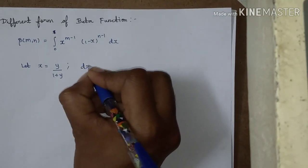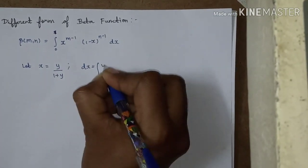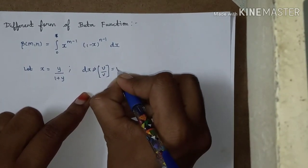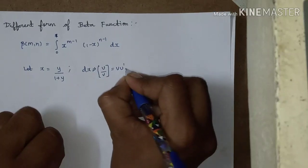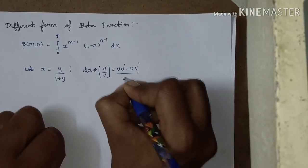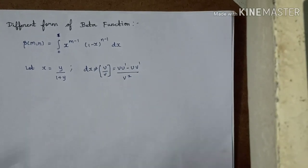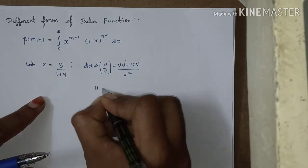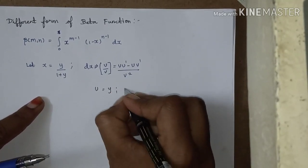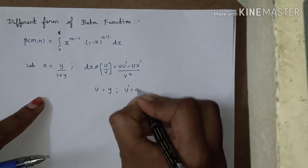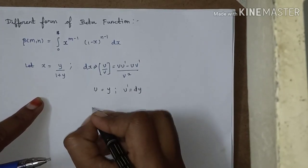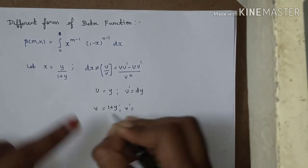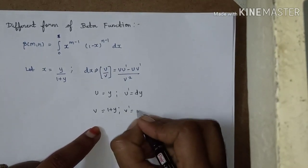We need to find dx. Using the u/v derivative formula: u/v equals v times u-dash minus u times v-dash, divided by v squared. Here u equals y, so u-dash equals dy. And v equals 1 plus y, so v-dash equals dy.